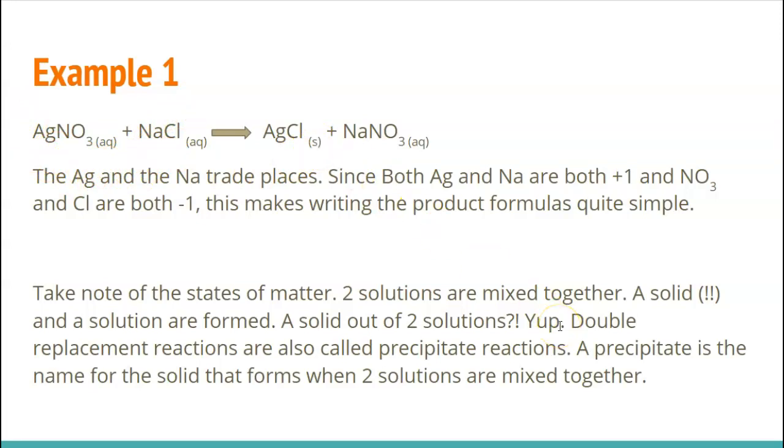But one cool thing to notice is that we have two solutions here, two aqueous. And at the end, we have an aqueous and a solid. A solid? Yeah. You take two solutions and you get solid chunks that form, which is pretty awesome. And so those solid chunks that form are called a precipitate. And so sometimes you'll hear people call double replacement reactions precipitate reactions because the solid chunks is what forms in one of these reactions oftentimes, which is pretty cool.